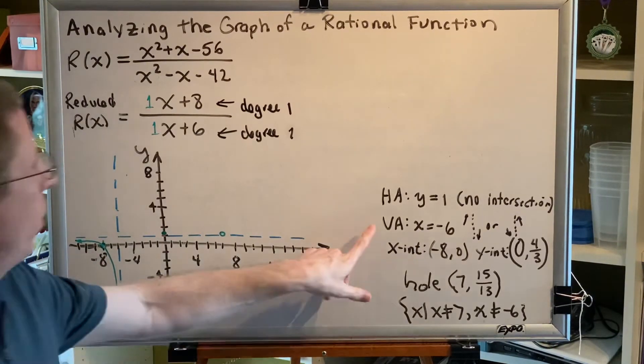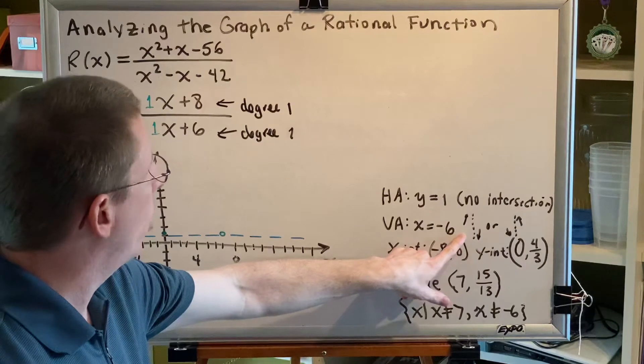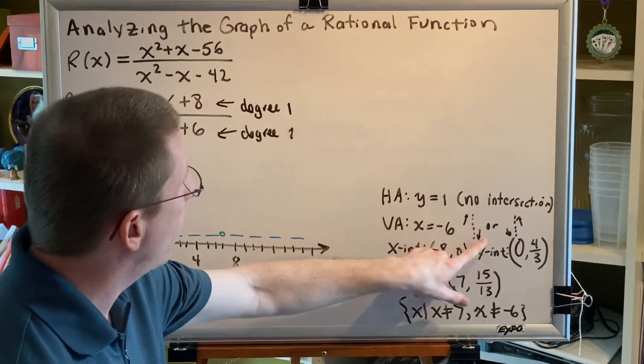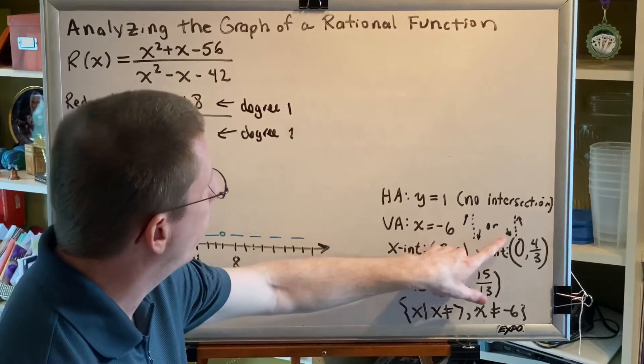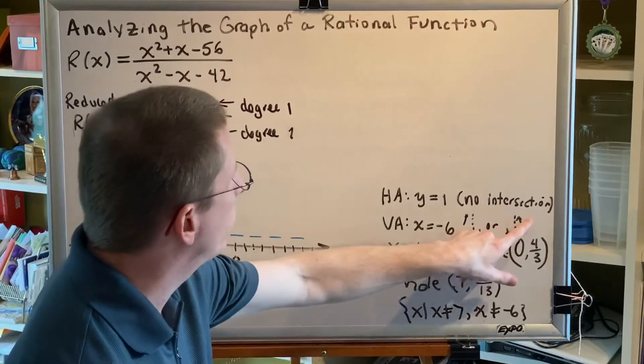We learn that our vertical asymptote is either approached above on the left and below on the right or the reverse of that, down on the left, up on the right.